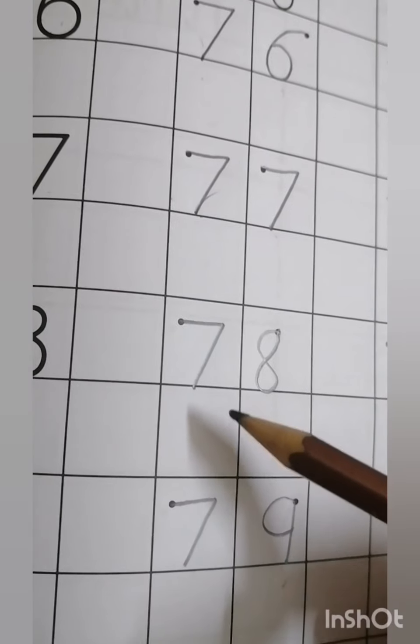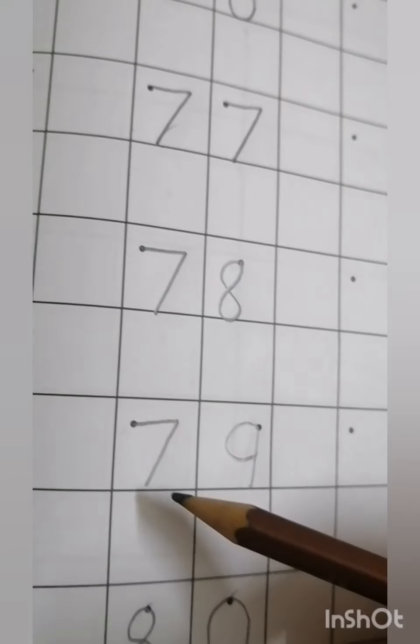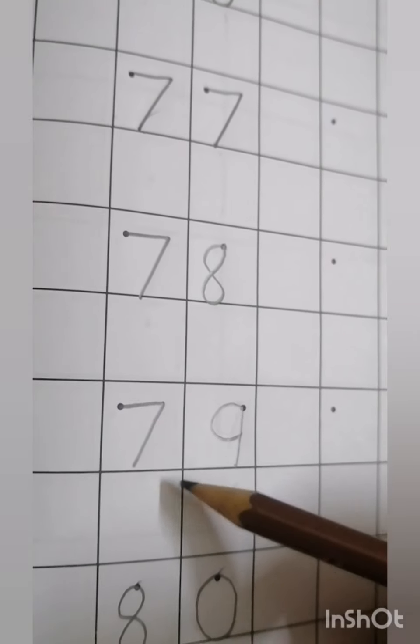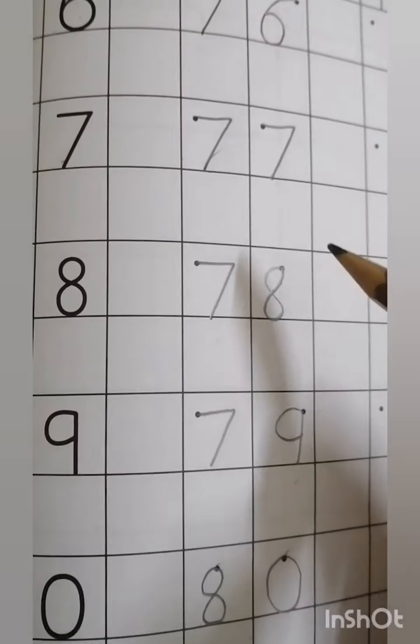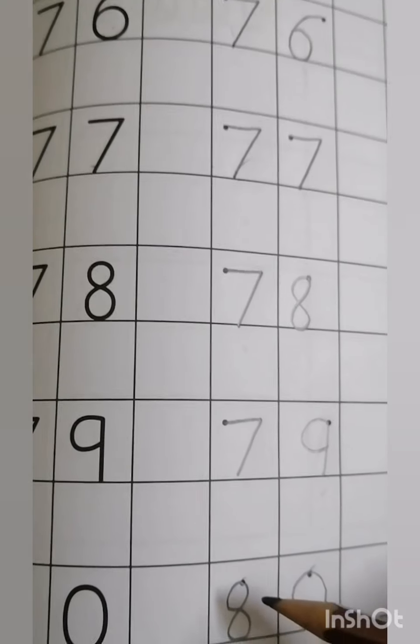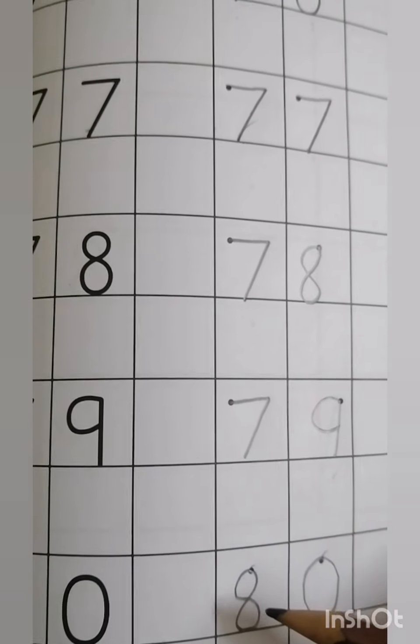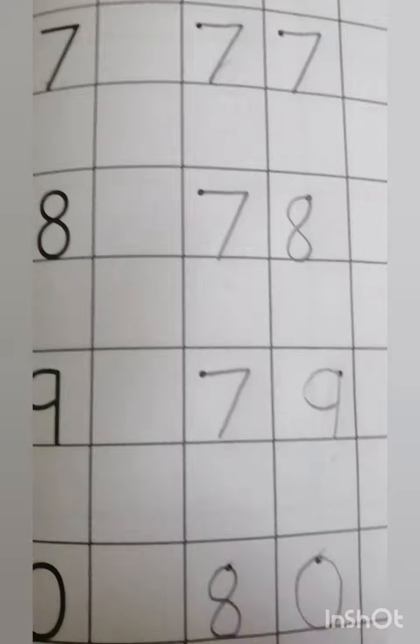7 and 8 makes 78. 7 and 9 makes 79. 8 and 0 makes 80. Now start reading and writing. Keep smiling, Allah Hafiz.